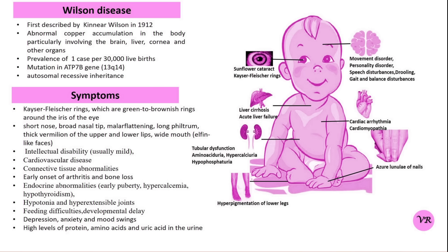Wilson disease requires lifelong management with close monitoring for side effects of treatment and progression of the disease. Initial therapy includes copper chelation — that is, penicillamine or trientine — to reduce copper levels, zinc therapy to prevent copper absorption, and avoiding copper-rich foods. In case of liver failure or decompensated cirrhosis, regular follow-ups for copper levels, liver function and neurological status are required.